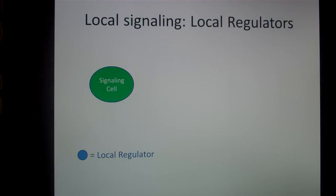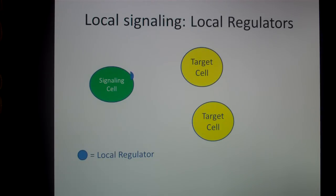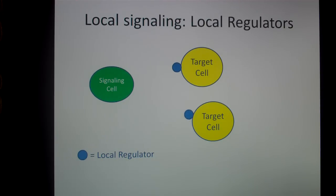There are two kinds of signaling: local signaling and long-distance signaling. If we have a signaling cell that needs to communicate with cells nearby, it's going to use something called a local regulator. The local regulator will be released and reach its target cell. An example of this might be growth factors — one signaling cell can make growth factors and have an influence on many cells nearby, causing them to grow and divide and reproduce.